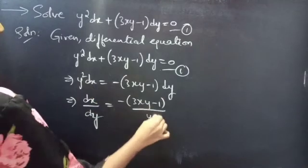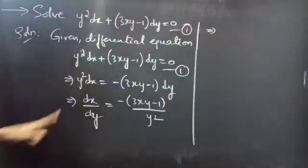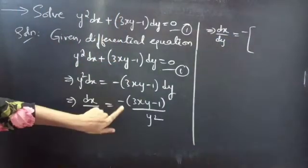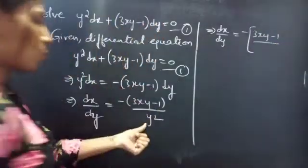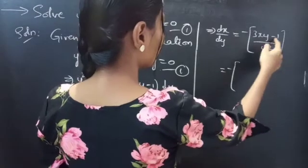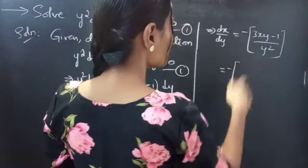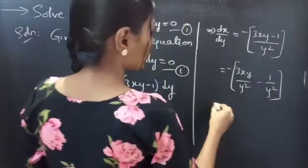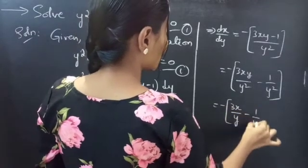Take this y² to the RHS. Then dx/dy equals — we can write the RHS as −(3xy − 1) / y². So in the RHS, the numerator has two terms and the denominator has one term. We can split this into two terms: −3xy/y² − (−1/y²). One y gets cancelled, giving −3x/y + 1/y².